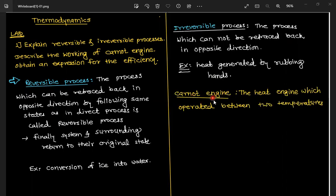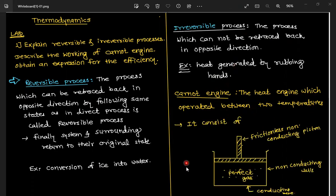Next is the Carnot engine. What is a Carnot engine? The heat engine which operates between two temperatures — that is a very simple definition. Now let's look at what it consists of.